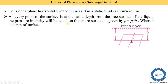The pressure intensity will be equal over the entire surface and is given by p = ρgh. Pressure intensity depends on three factors: rho, g, and h. If h increases, pressure intensity increases; if h is reduced, pressure intensity is reduced. Here h is the depth of the surface — if this horizontal surface goes deeper into the water, the value of p increases.